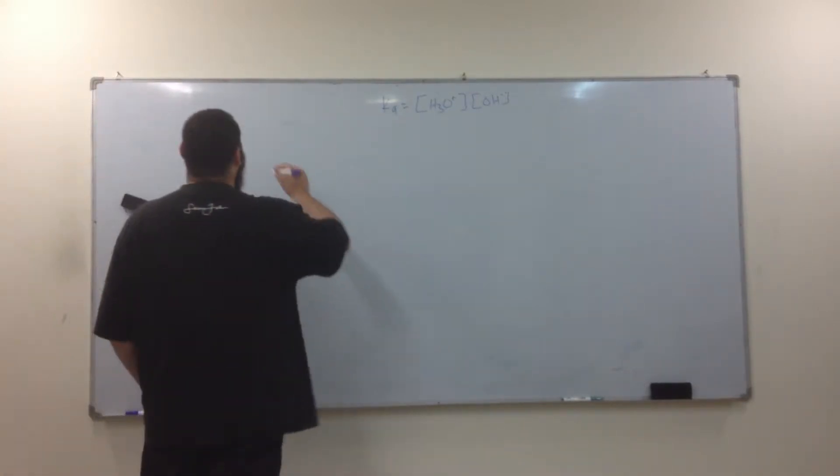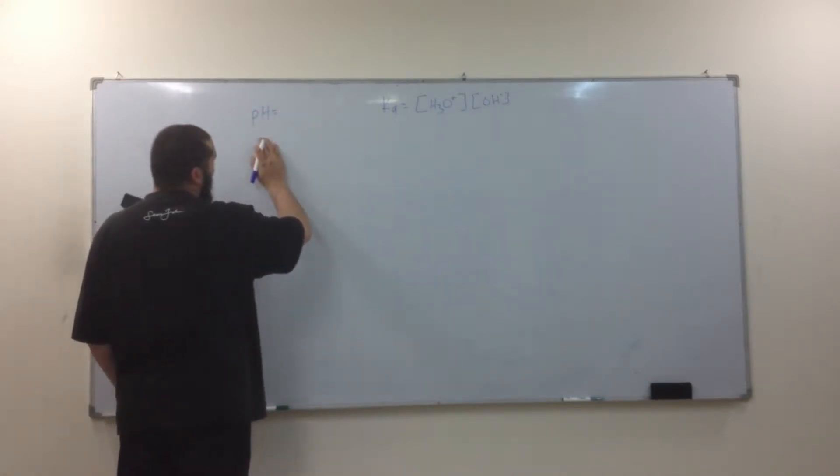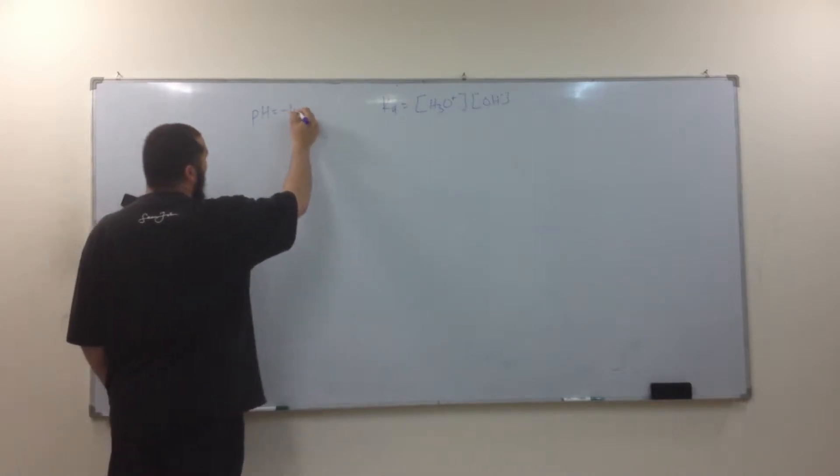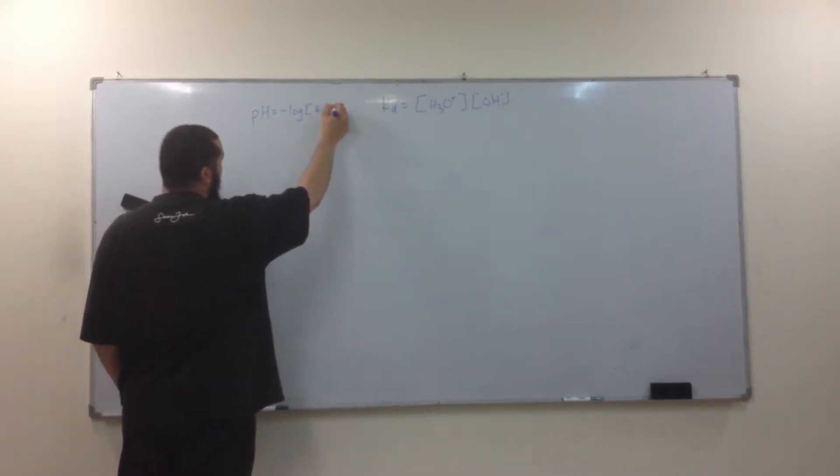Now, pH. How do you find pH? Negative log of the concentration of H3O plus.